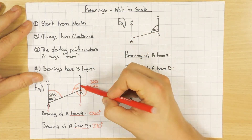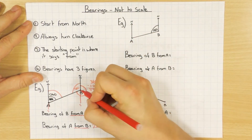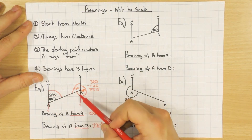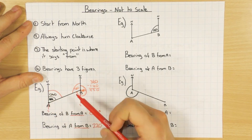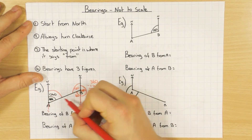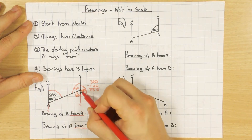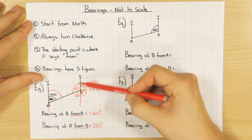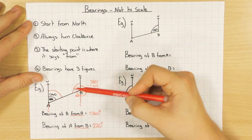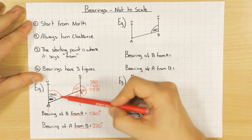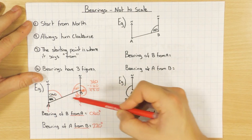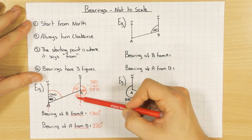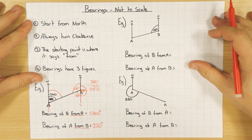To summarise the two approaches: you can use the interior rule to find the angle you don't want, then take it away from 360. Or you can use the straight line of 180 and the alternate rule with the south line to add 40, giving 220. Either method works — it's entirely up to you.